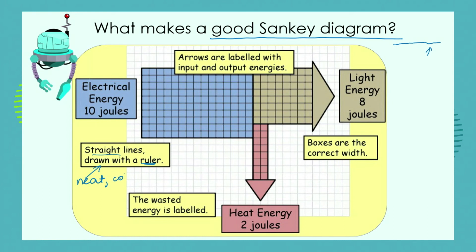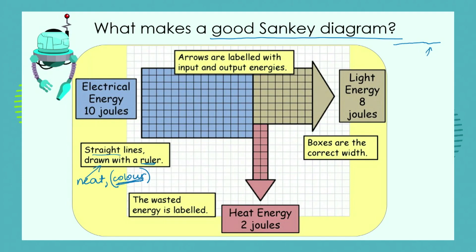I like to use a little bit of color to split the diagram clearly into the input and the two forms of output energy, but color is not essential. If you're writing a test and running out of time, don't worry about adding color — just keep it neat with your pencil and ruler.